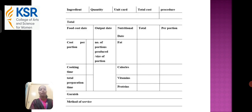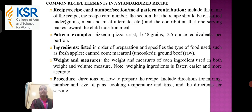These are examples of a standardized recipe menu card. Common recipe elements in a standardized recipe include the recipe or recipe card name and the meal pattern contribution section. This includes the name of the recipe, the recipe card number, the section that the recipe should be classified under — such as grains, meat, and others — and the contribution that one serving makes towards the children's nutrient meal pattern. For example, pizza with pressed beef for grains: 2.5 ounce equivalents per portion.